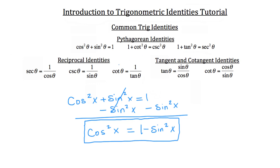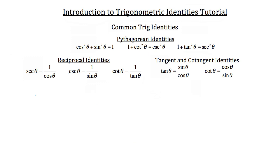Eventually you're going to memorize them after you've done enough of these problems. However, in the beginning, you really want to have them available as you're approaching these problems. After Pythagorean identities, we can look at the reciprocal identities. These are pretty straightforward. For example, the secant of theta is equal to one over cosine theta. The cosecant of theta is equal to one over sine theta. And the cotangent of theta is equal to one over tangent theta.